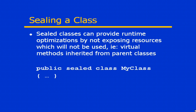Sealed classes can also provide some runtime optimizations, basically by not exposing resources that are not going to be used. For example, let's say that you have created a class which derives from another class. Your class, therefore, may have some virtual methods that it has inherited from its parent class. If you don't want to allow any additional subclassing from the class that you've created, and you want to make this as efficient as possible, you can mark this as a sealed class. If you use a sealed class, then the runtime doesn't have to monitor those virtual methods or make those available for overwriting when it's publishing those interfaces and references within the class loader. So it actually can be more efficient when you're physically executing those classes if they are sealed.